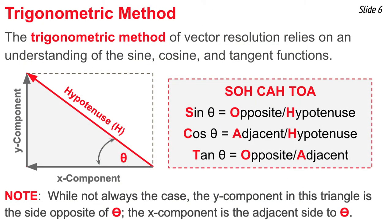Now we will discuss the trigonometric method of vector resolution. This method relies upon an understanding of the sine, cosine, and tangent functions from trigonometry. Here we see a right triangle and the hypotenuse is labeled, and one of the acute angles within the triangle is labeled with theta. The sine of theta tells us the relationship between the length of the side opposite theta — in this case the y component — and the hypotenuse's length. The cosine of theta tells us the relationship between the length of the adjacent side and the length of the hypotenuse, and the tangent of theta tells us the relationship between the length of the opposite side and the adjacent side.